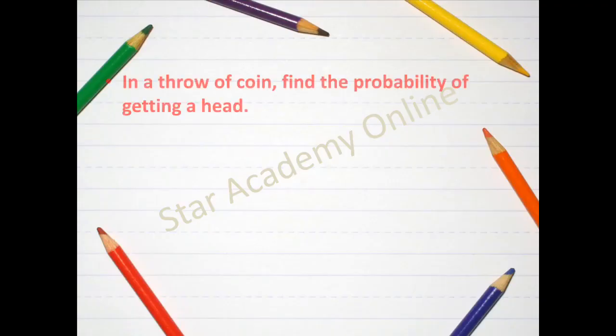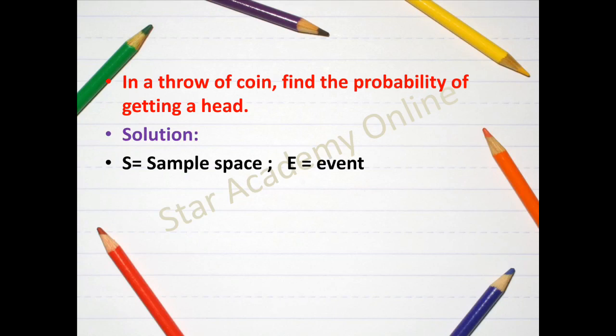Now moving on to the first question of the day, in a throw of coin, find the probability of getting a head. Now we are talking about probability kind of questions and these kind of questions we have to find two things, that is first one is sample space and the second one is E which is equal to event. Now sample space means all the values that you have in the given question, whereas event means what does the question want from you.